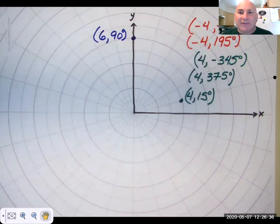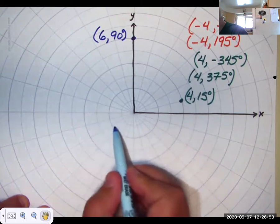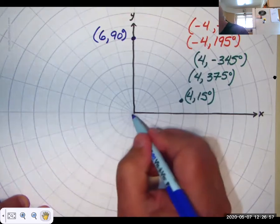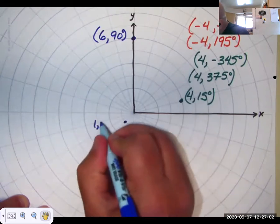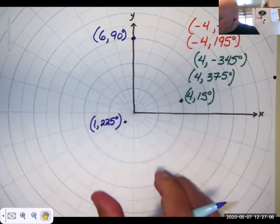Where is 1, 225 degrees? Either graph it on your paper or put your finger on the screen. Now I don't remember what number I said. I think it's 1, 225 degrees. So here's 180. Here's halfway through. So this is 225 degrees going in this direction. I went one unit away from the pole. Right?